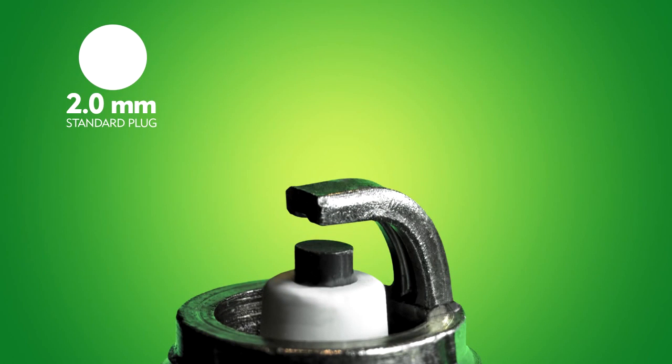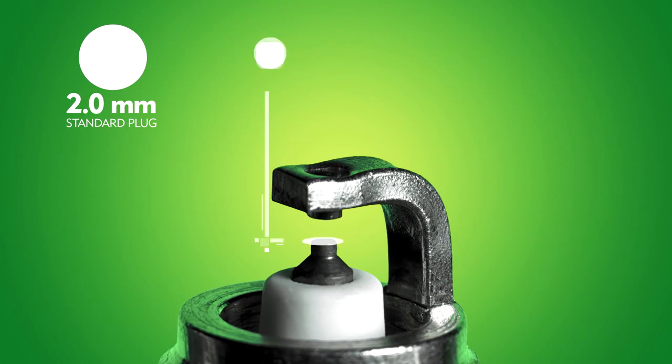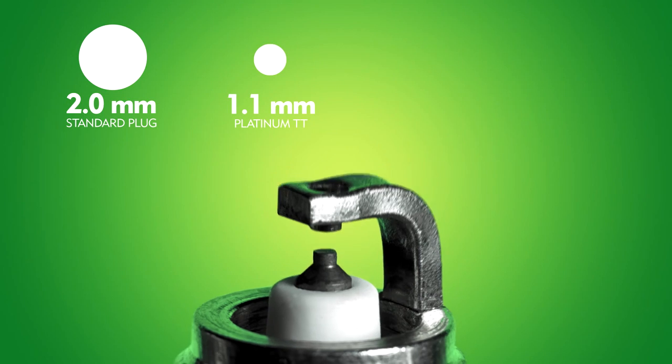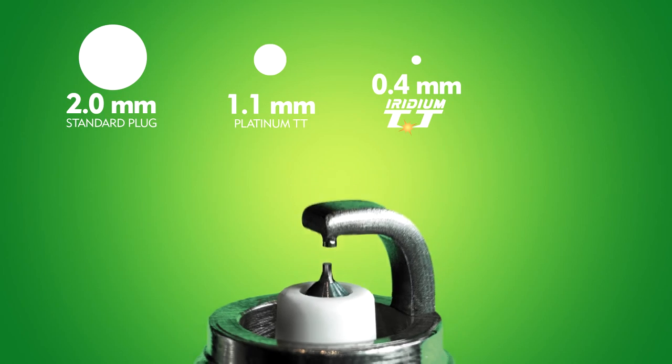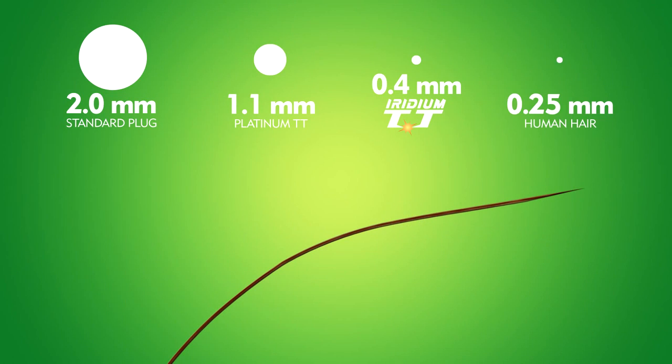A smaller electrode has anti-fouling characteristics and lessens heat quenching, delivering less interference and maximizing firing potential. To provide the best plug in the market, Denso developed a proprietary 360-degree laser welding process.